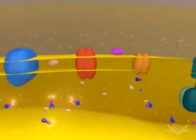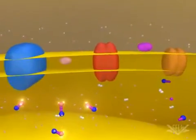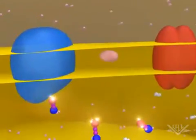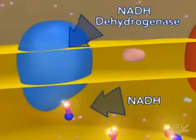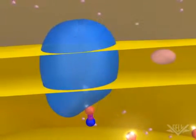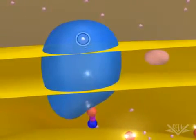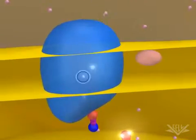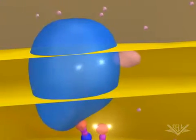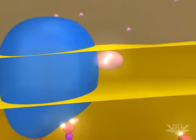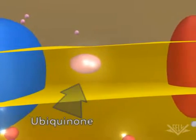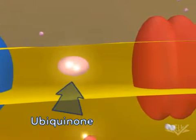At the start of the electron transport chain, two electrons are passed from NADH into the NADH dehydrogenase complex. Coupled with this transfer is the pumping of one hydrogen ion for each electron. Next, the two electrons are transferred to ubiquinone.